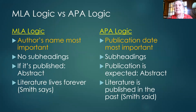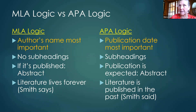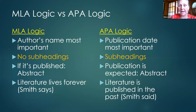There's a little different logic between them. In MLA, for the humanities, the author's name is most important — that's what gives it validity, so you'll see the author's name more prominently. In APA, focused on the sciences, they worry more about when something was published — its currency. Also, an MLA paper doesn't have subheadings, but an APA paper does, since in the sciences you want to skip to the most important part.